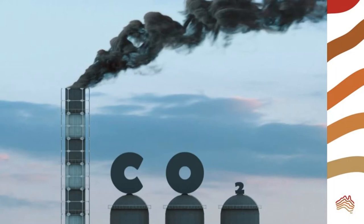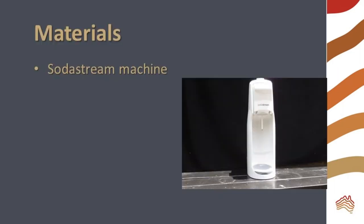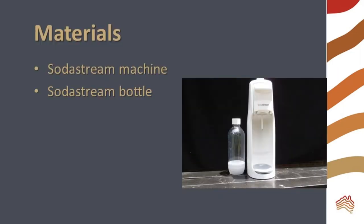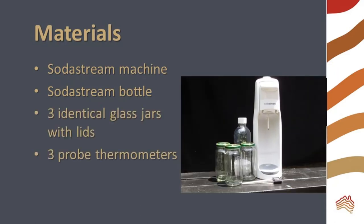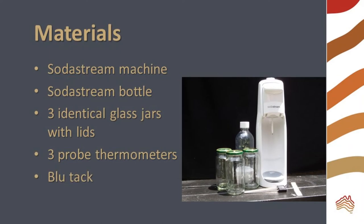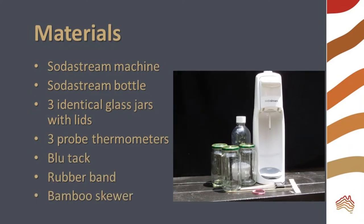In this experiment, we are going to measure the effect of carbon dioxide on the greenhouse effect. You will need a SodaStream machine, a SodaStream bottle, three identical jars with lids, three probe thermometers, blue tack, a rubber band, and a bamboo skewer.